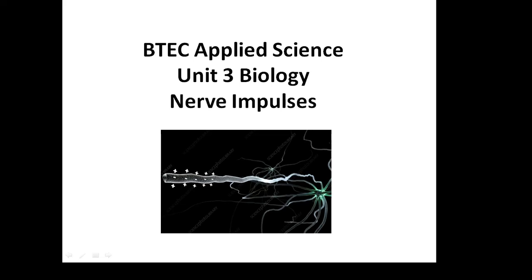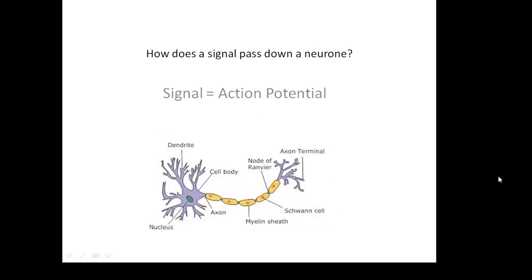Tech Applied Science, Unit 3 Biology, Nerve Impulses. In the last video we talked about the structure of neurons and we talked a bit about the signal travelling down the neuron, and here we're actually going to describe how the signal travels down.